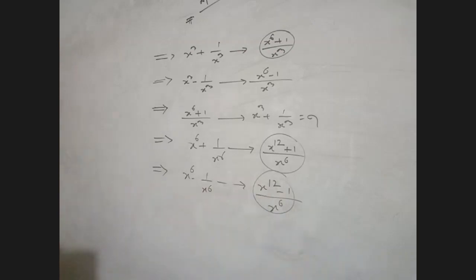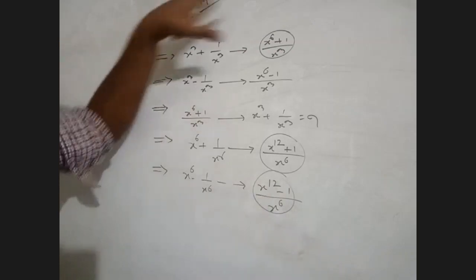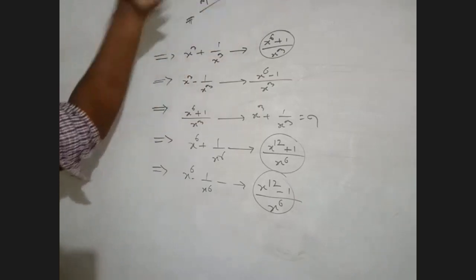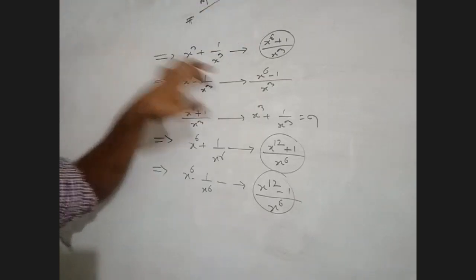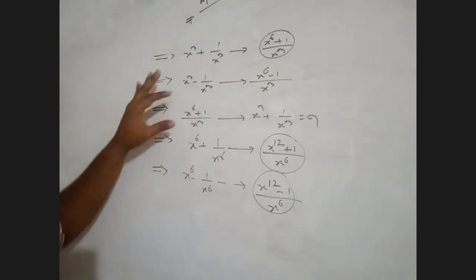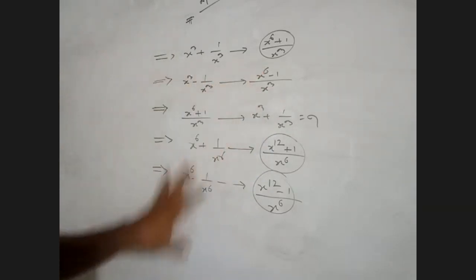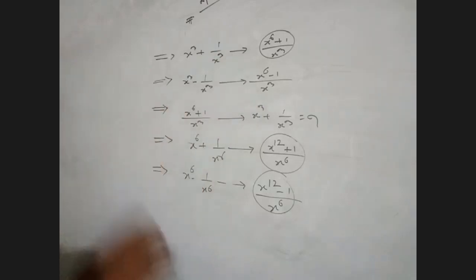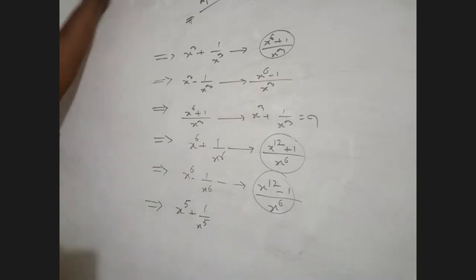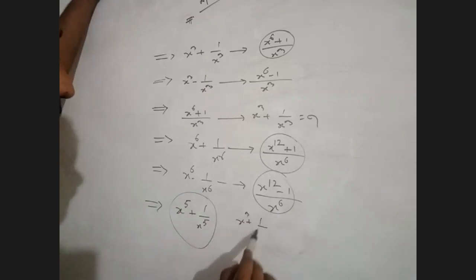Taking the formula, applying the formulas on about the cube side. Using the formula, x to the power 5 plus 1 divided by x to the power 5. The concept is to make it clear. After x to the 5 and 1 divided by x to the 5, we have x cube plus 1 by x cube.